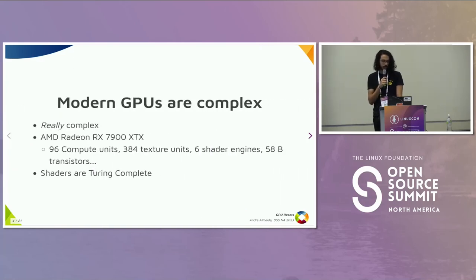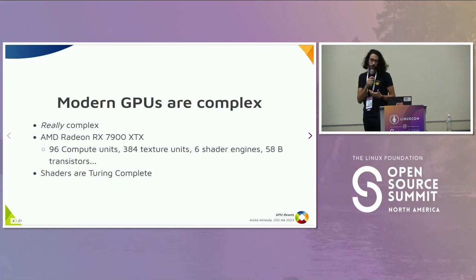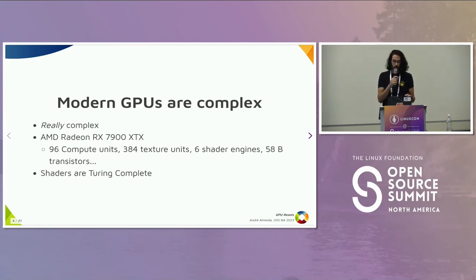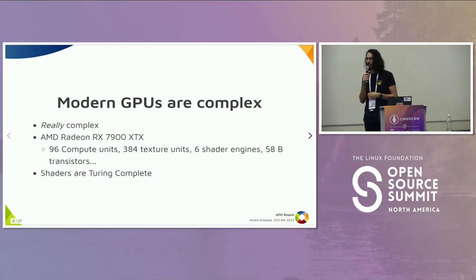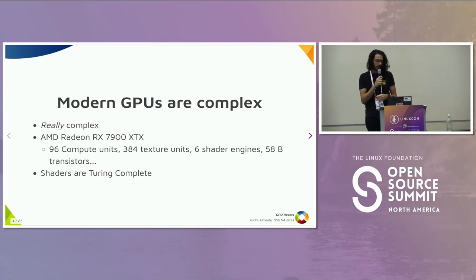That happens because modern GPUs are really complex — very, very complex. If you look at the numbers from the latest AMD GPU, there are a lot of parallel things happening: a lot of compute units, transistors, and shaders are Turing complete. So that means you can't guarantee that code will not be looping forever. GPUs are very complex nowadays.